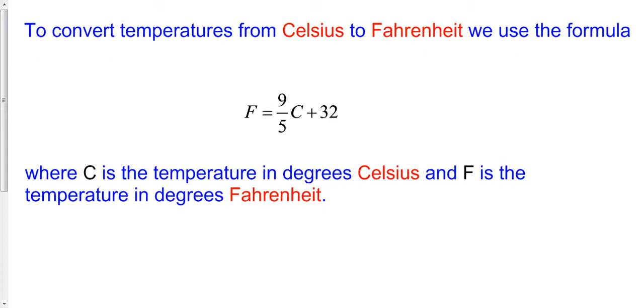To convert temperatures from Celsius to Fahrenheit, we use the formula F equals 9 fifths C plus 32. That's this formula right here.